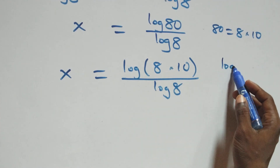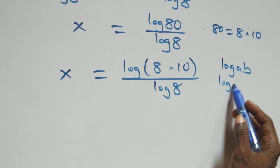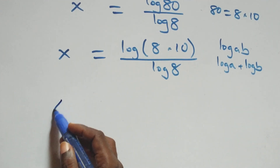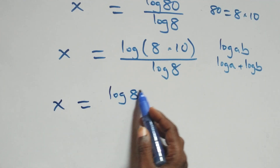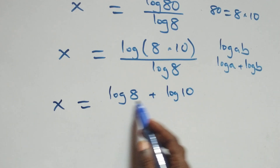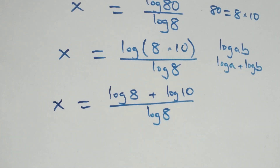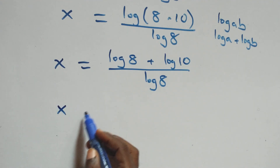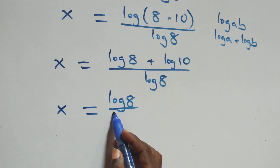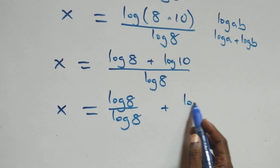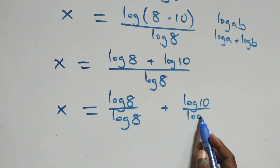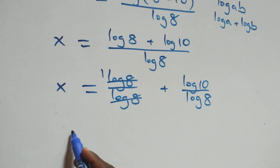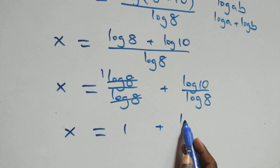This follows the log product rule. We have log(8 × 10) over log 8, which becomes log 8 plus log 10 all over log 8. That gives us x equals to log 8 plus log 10 over log 8.